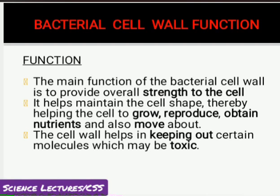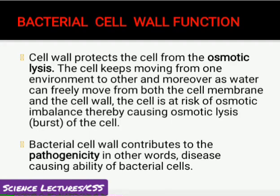Bacterial cell wall bacteria کے لیے variety of functions perform کر رہی ہے: cell کو strength دینا، cell کا grow کرنا، conjugation کے وقت two bacteria کا ایک دوسرے سے connect ہونا، nutrients کو absorb کرنا، toxins کو away رکھنا، اور دوسرے organisms میں toxicity produce کرنا۔ اس کے علاوہ cell کے اندر جو salt pressure ہے اسے maintain کر کے cell کو lysis سے protect کرنا — یہ سارے functions bacterial cell wall کی ہیں۔